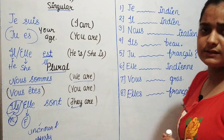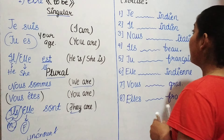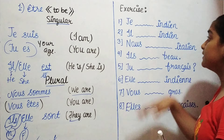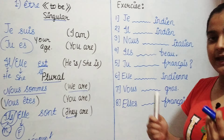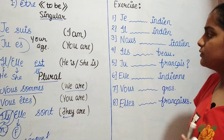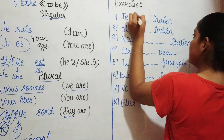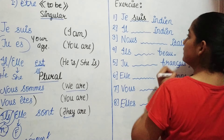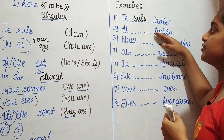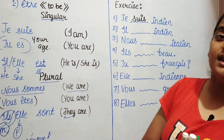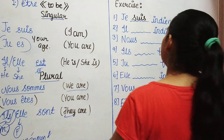Now let's solve eight questions. First question: je ___ indien — 'I ___ Indian.' The answer is je suis. Second: il ___ indien — 'he ___ Indian.' The answer is il est — he is Indian.